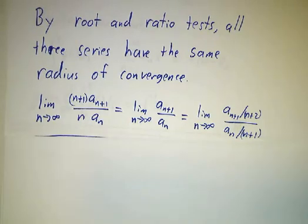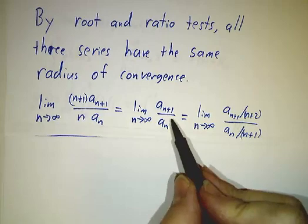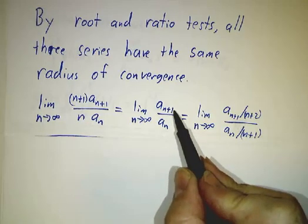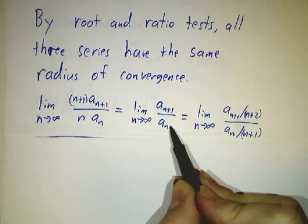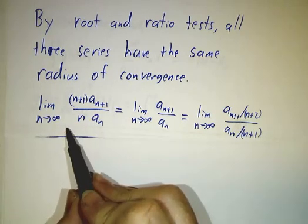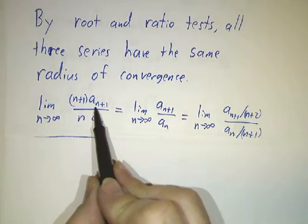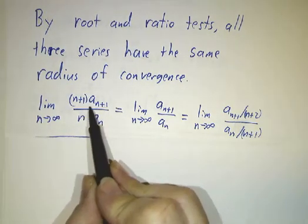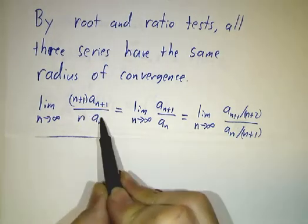You can get that by using the ratio test. If you apply the ratio test to the original function, you're interested in the limit of aₙ₊₁ over aₙ, and that's some number. If you apply the ratio test to the derivative, the derivative involves aₙ₊₁, aₙ₊₁ x to the n. So the nth term divided by the n minus first term looks just like this.